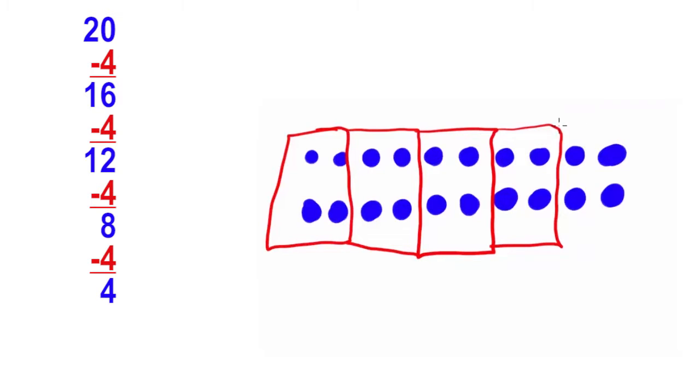I will notice the last four are left on my model. I will put my final box around those four, and 4 minus 4 is 0. And as I look at my model I can also see that I do not have any dots that are left over. So my repeated subtraction matches the model that I have on the side.